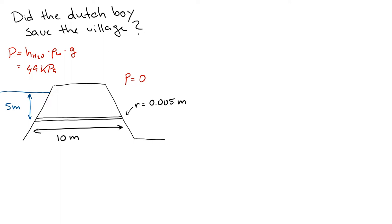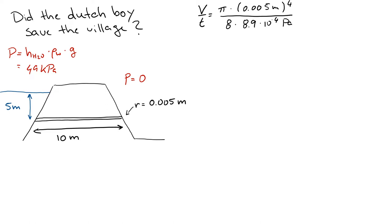Now let's use this information in the Hagen-Poiseuille equation. We calculate the volume per time as pi times the radius of the conduit, 0.005 meters to the fourth power, divided by 8 times the viscosity, which is 8.9 × 10⁻⁴ Pascal seconds, times the pressure difference of 49,000 Pascals divided by 10 meters. This gives 104 cubic meters of water per day flowing through a pipe that is 10 meters long with a half-centimeter radius.